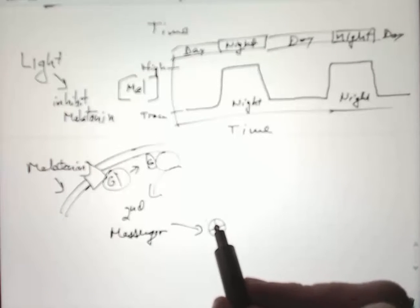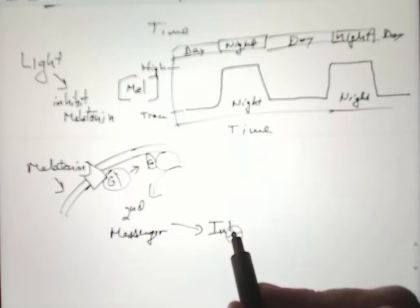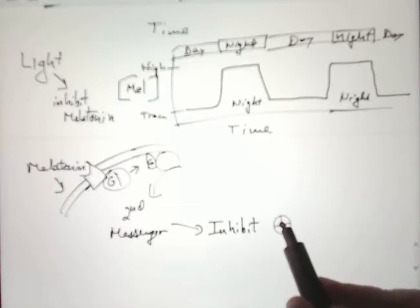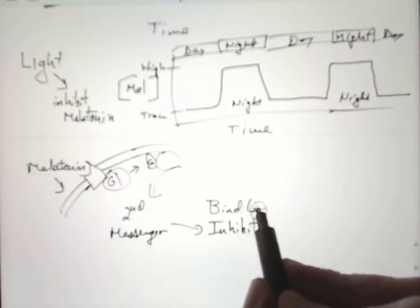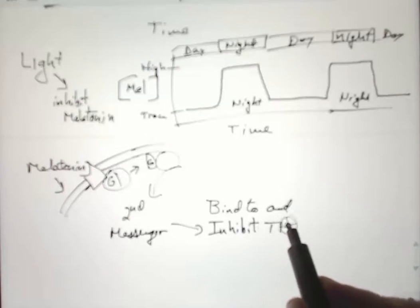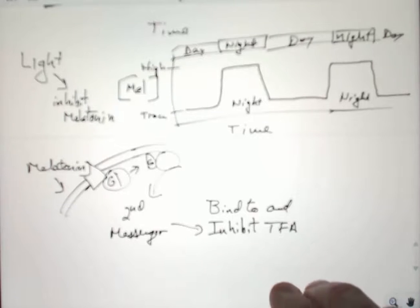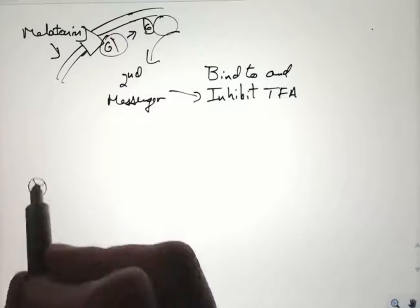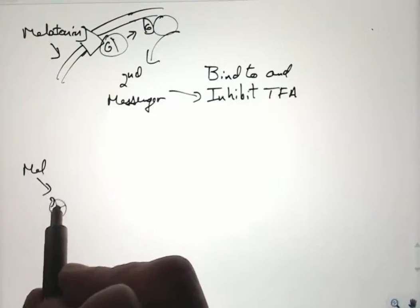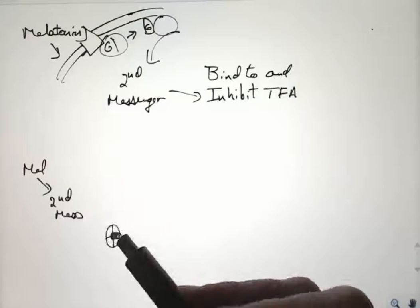Now imagine that cyclic AMP, or the second messenger, can bind to one of the transcription factors and inhibit some stage of this process, binding to and inhibiting transcription factor A. So now we have transcription factor A bound to a second messenger that cannot bind to its target sites.